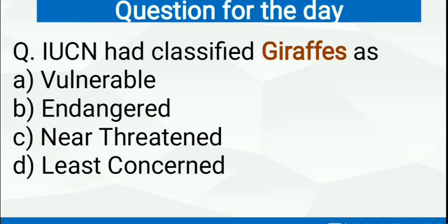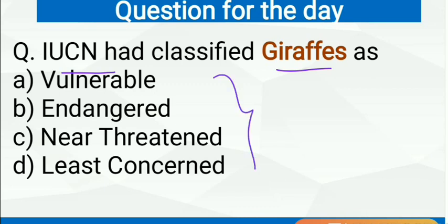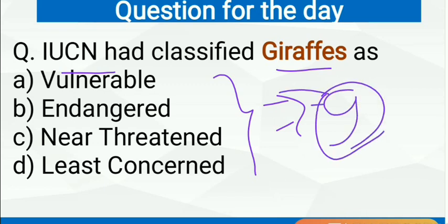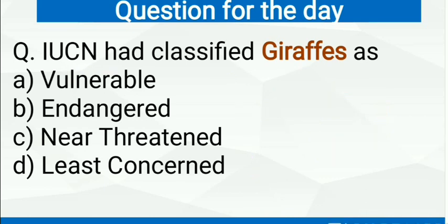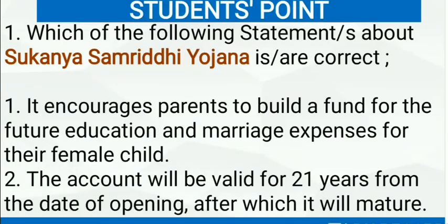Let's begin. First, let's see the question for the day which you have to answer in the comment section. On Sunday we will see how many of you were the most consistent in answering all the questions correctly throughout the week. The question: IUCN had classified giraffes as — IUCN categorizes species of plants and animals based on their threat to extinction into nine different categories; giraffe is categorized into one. Read the options and then answer.